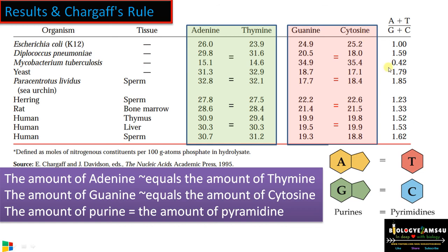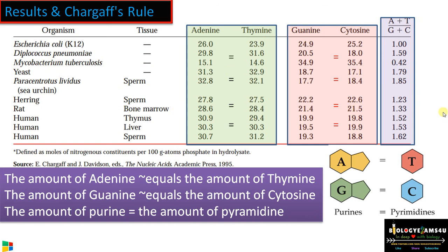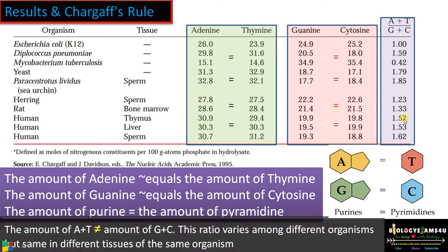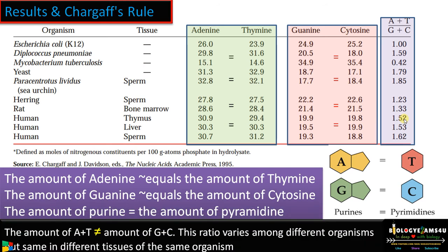Moving into the second part of Chargaff's rule: he found that the amount of A+T is not equal to the amount of G+C in different species. In E. coli the ratio is 1, whereas in Diplococcus it is 1.59, in rat it is 1.33, whereas in humans it is 1.52. So the second part is: the amount of A+T is not equal to the amount of G+C; the ratio varies among species.